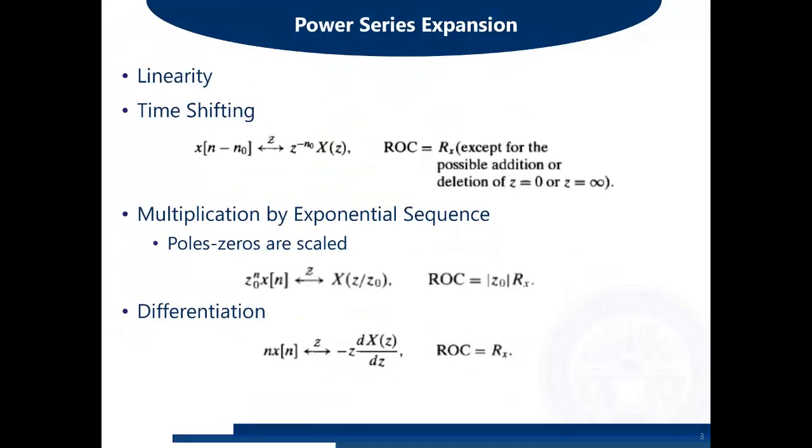It is basically multiplication by an exponential sequence. If we have a sequence X(n) and we multiply it with z₀ raised to power n, where z₀ is any constant, it can be real, it can be imaginary, it can be complex.